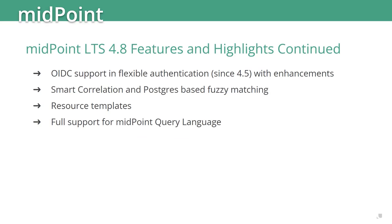There has been a lot of interest in using OIDC for flexible authentication. Until now you couldn't do multiple scopes and similar things, but enhancements have been added, and there are already some clients using this. Smart correlation, added in the 4.6 timeframe and further enhanced, uses PostgreSQL-based fuzzy matching on the backend, giving MidPoint the power to match people when records are not one-to-one — for example matching on a mix of first name, last name, and birthday, or even fuzzy matching like 'Matt' to 'Matthew'.